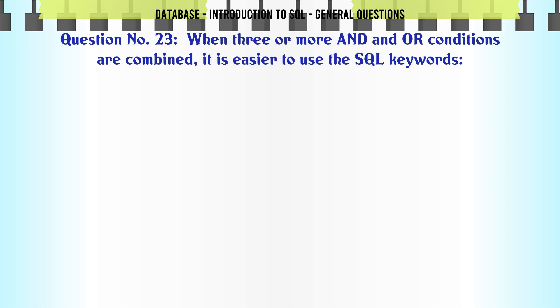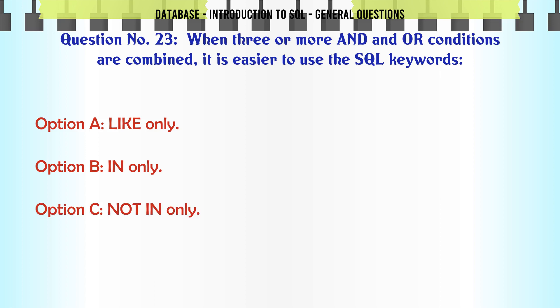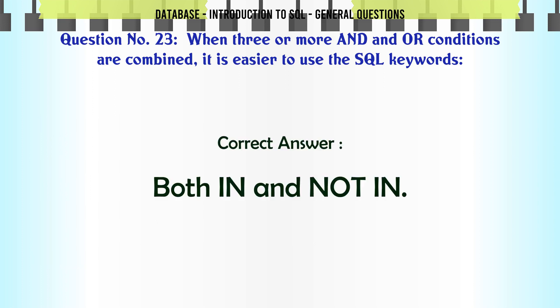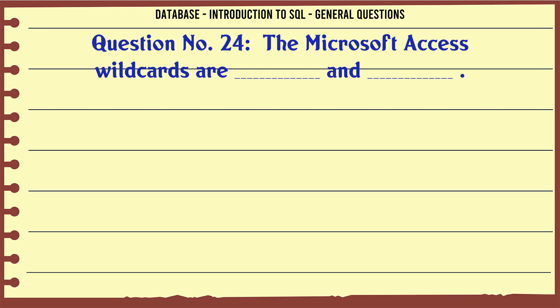When three or more AND and OR conditions are combined, it is easier to use the SQL keywords: A. Like only. B. In only. C. Not in only. D. Both in and not in. The correct answer is: both in and not in.